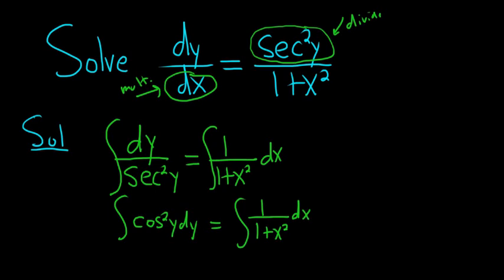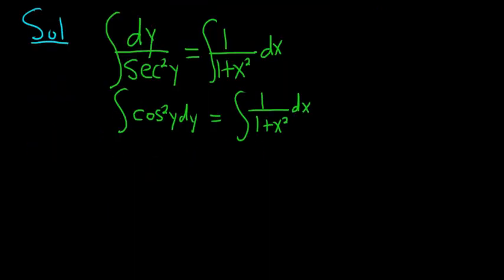So to integrate the left-hand side, we have to use a popular trig identity. We can write cosine squared as 1 plus cosine 2y over 2 dy. So that's a very useful trig identity. It is totally worth knowing.